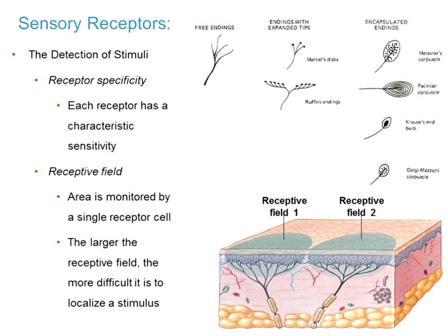Allowing general senses to give you lots of input comes down to receptor density and receptive fields. Some receptors are high in density and have small receptive fields — they only respond to a stimulus in a small area. With high density and a small field, when a stimulus hits your finger, it can stimulate multiple receptors, giving you a lot of detail and data points about what that stimulus is.